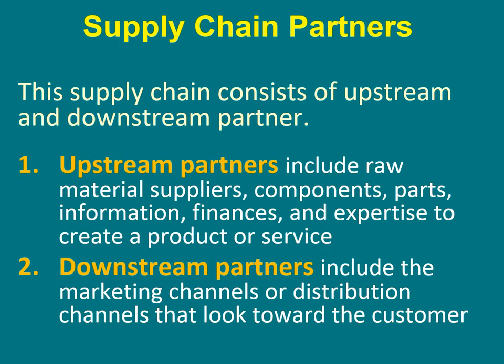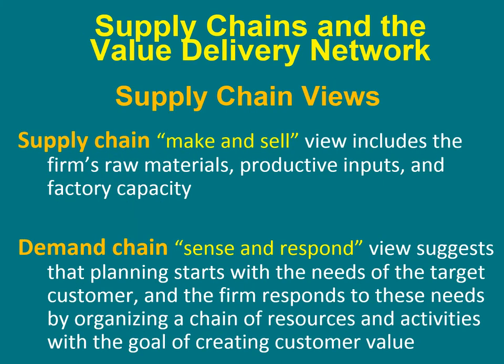This supply chain consists of two types of partners: upstream partners and downstream partners. Upstream partners include raw material suppliers, components, parts, information, finance, and expertise to create a product or service. Downstream partners include marketing channels or distribution channels that look toward the customer.